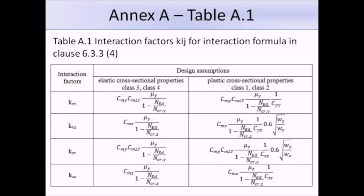This is table A.1, and this gives us the formulas to work out the interaction factors KIJ for interaction formula in clause 6.3.3. We have the interaction factors on the left, and then the formula that we use will depend on the class of the section. You might notice a lot of terms here beginning with C, so CMY, CMZ, CMLT, CYY, CYZ, CZY and CZZ. There's quite a lot, and some of the other terms you might not be familiar with, but the table continues on over the next few slides, and it details how you can work out these terms.